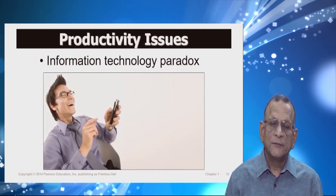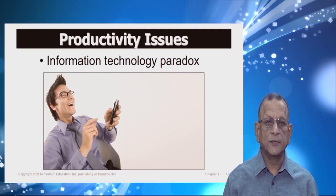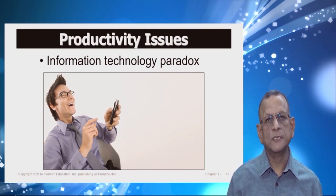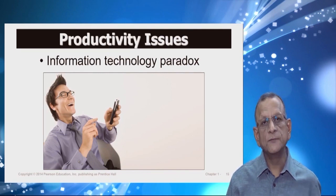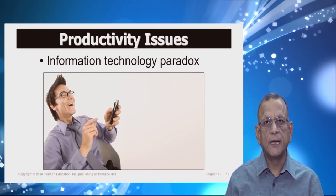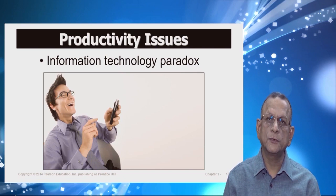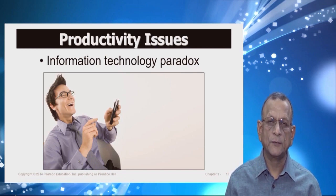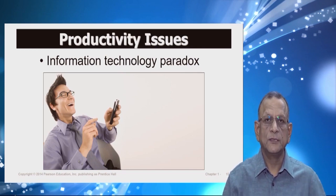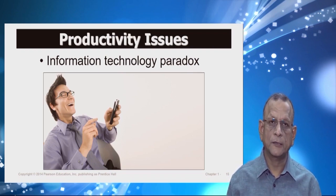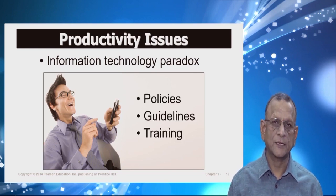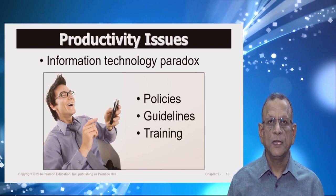There is something known as the information technology paradox. What is this paradox? A lot of information is available, but the challenge for us is to find the appropriate, usable, and suitable information and use it. So the challenge is to filter this information and find out the real, meaningful, and authentic information — this is known as the information technology paradox.